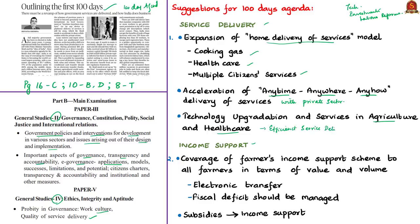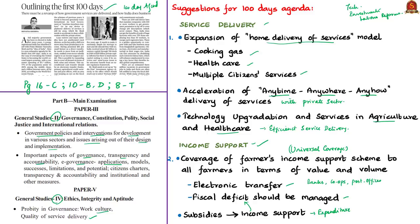The author suggests the newly introduced income support scheme to farmers should be universally covered — including all types of farmers irrespective of land holdings — with unconditional cash transfers made electronically through banks, primary agricultural credit societies and post offices. At the same time, the author suggests managing fiscal deficit, since more government spending on income support increases budgeted expenditures. The author notes that loan waivers and input subsidies have not addressed rural distress efficiently, and the key policy shift should be moving away from subsidies to income support.